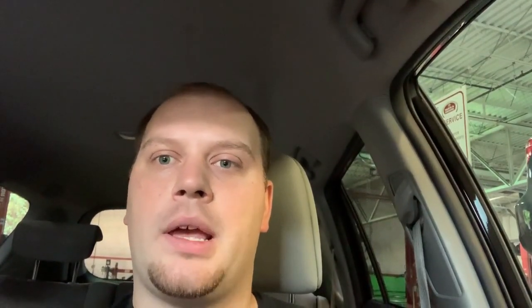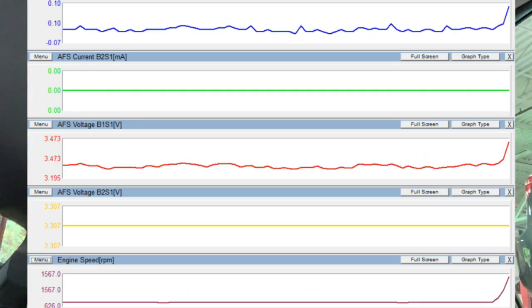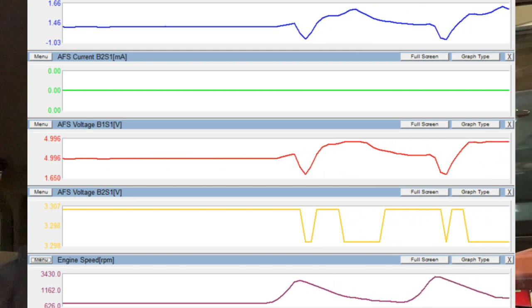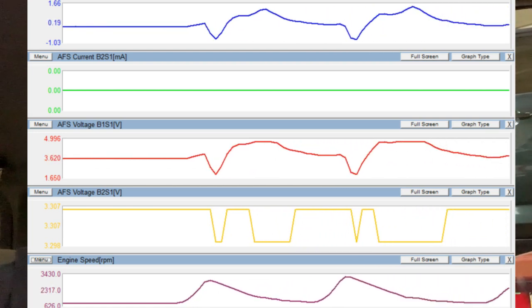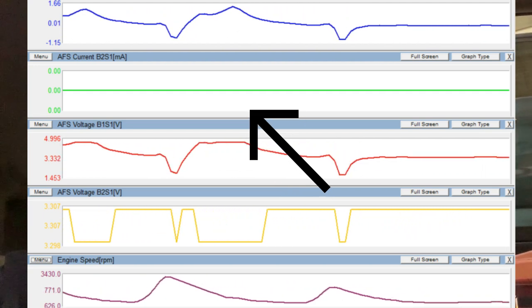I already went ahead and diagnosed this, but while going over this with my apprentice I showed him a trick on how to simulate a sensor just to make sure the ECM is working. So I have my data pulled up, you can see when I give this gas, bank one sensor one reacts. You can see bank two sensor one does not, it is stuck right at zero milliamps.